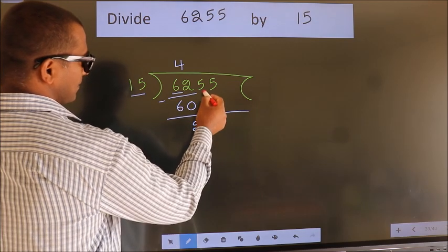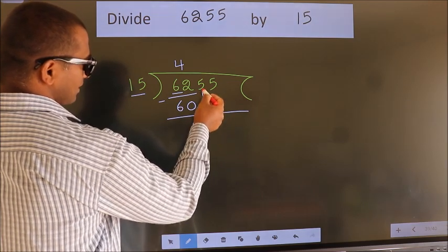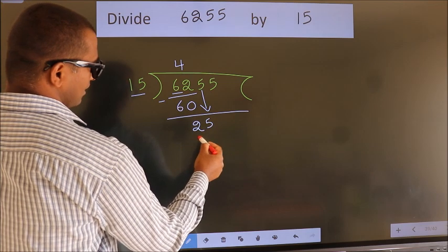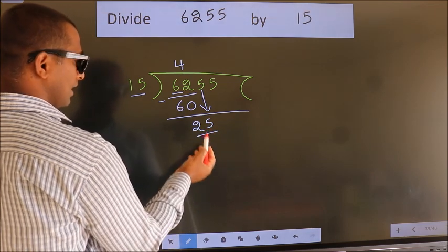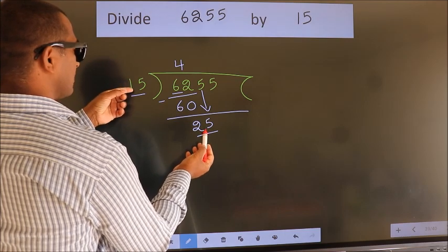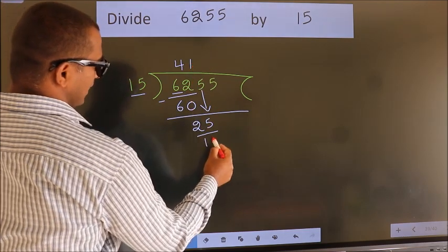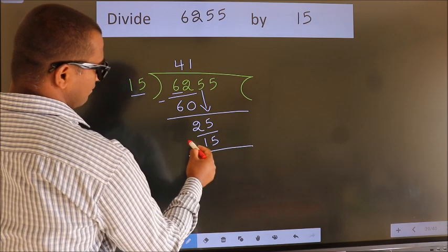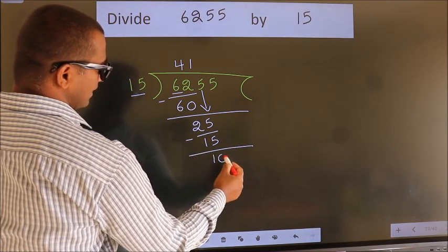After this, bring down the beside number. So 5 down. So 25. A number close to 25 in the 15 table is 15 once, 15. Now we subtract. We get 10.